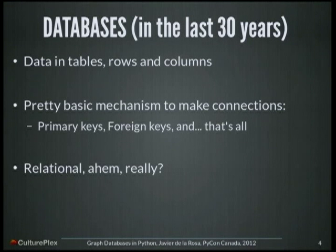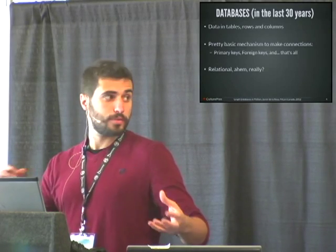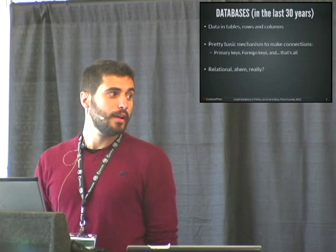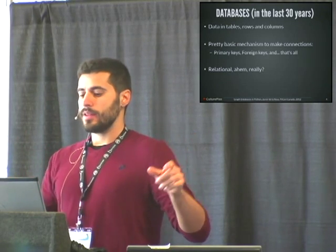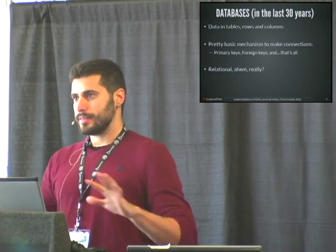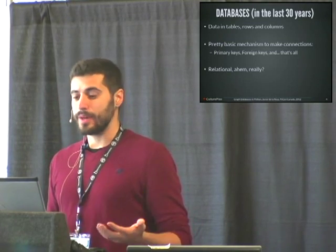In the last 30 years, databases have been relational. That means that all you have to store your data are tables, rows, and columns. So we have a very basic mechanism to make connections between your data. Actually you only have primary keys — IDs in your rows — and foreign keys, and that's all. So that is not very relational.